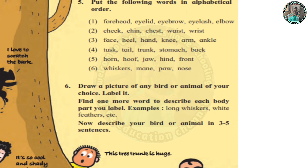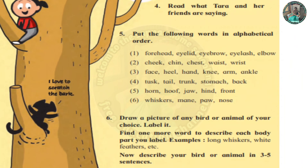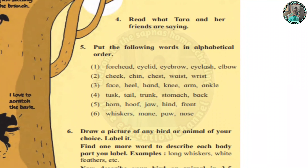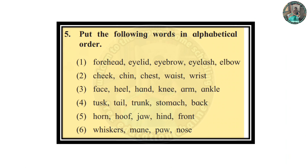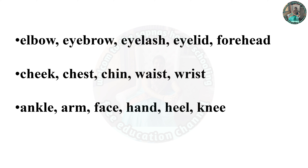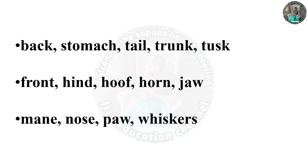Question 5: Write the following words in alphabetical order. Elbow, eyebrow, eyelash, eyelid, forehead, cheek, chest, chin, waist, wrist, ankle, arm, face, hand, heel, knee. Back, stomach, tail, trunk, tusk, front, hind, hoof, horn, jaw, mane, nose, paw, whiskers.